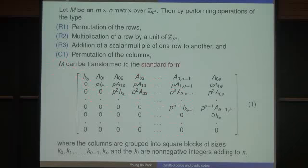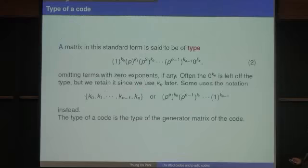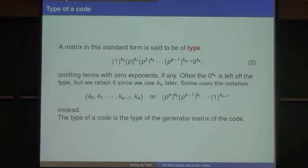The diagonal elements of the standard form are either 1, p, p-squared, etc. We say the type of the matrix is 1 to the number of 1s in the diagonal, p to the number of ps in the diagonal, and so on. This notation is not standard — some authors use different conventions, so we have to be careful.